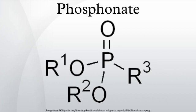Phosphonates and phosphonic acids are organophosphorous compounds containing C-PO(OH)2 or C-PO(OR)2 groups. Phosphonic acids and phosphonate salts are typically white, non-volatile solids that are poorly soluble in organic solvents, but soluble in water and common alcohols. Many commercially important compounds are phosphonates, including glyphosate, the herbicide Roundup, and ethephon, a widely used plant growth regulator.